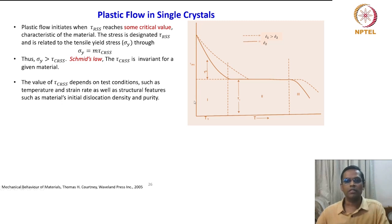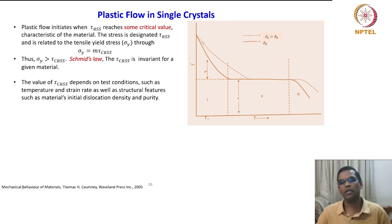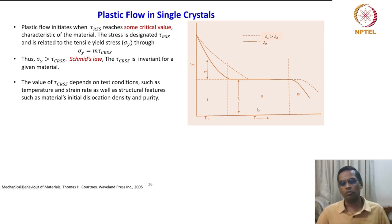The plot shows not only the temperature variable but also a strain rate variable. The dashed line is strain rate ε̇₁, which is greater than strain rate ε̇₂. The solid line is ε̇₂. This shows both temperature effect and strain rate effect on tau_CRSS.